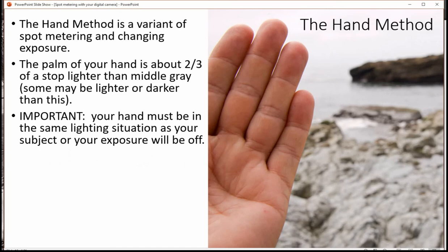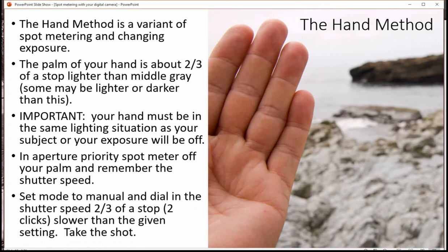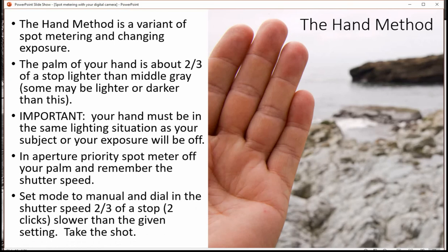This is important. Your hand has to be in the same lighting situation as your subject, otherwise your exposure is going to be off. So in aperture priority spot meter off your palm and remember the shutter speed. Set your mode to manual and dial in the shutter speed two-thirds of a stop, that's two clicks slower than the given setting. Take the picture.